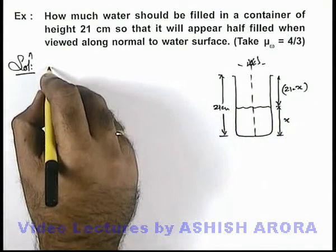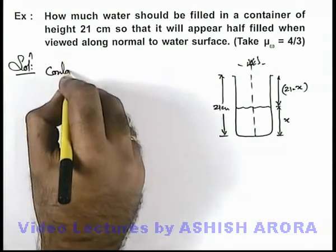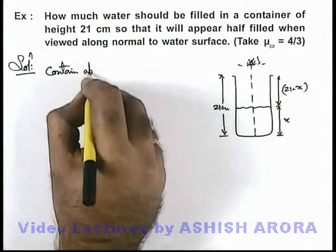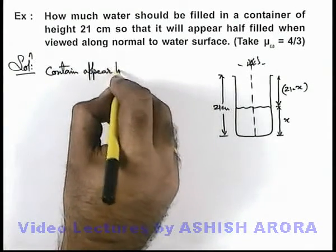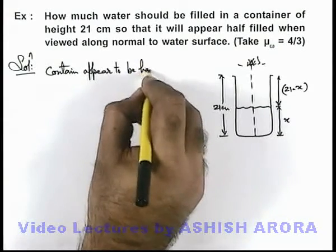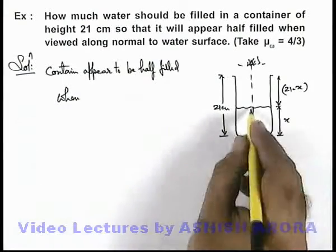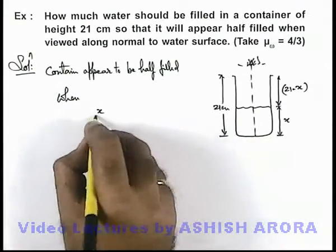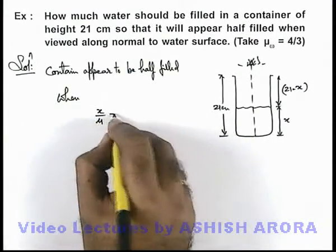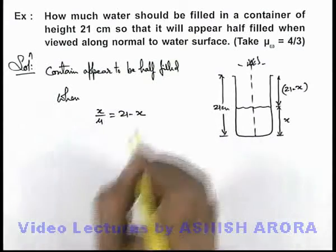So here we can say container appears to be half filled when the apparent depth of water in the container, which is x by μ, should be equal to 21 minus x.